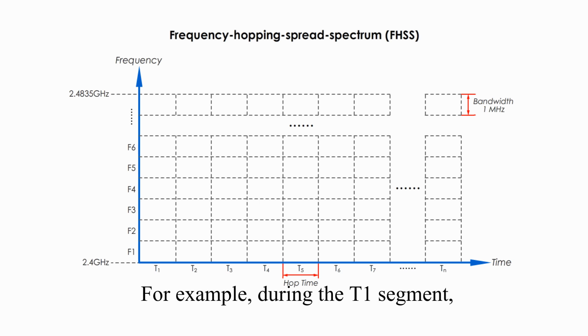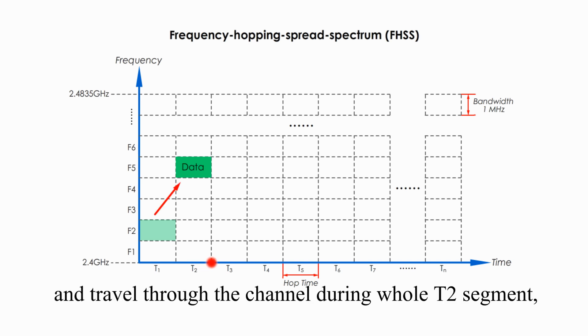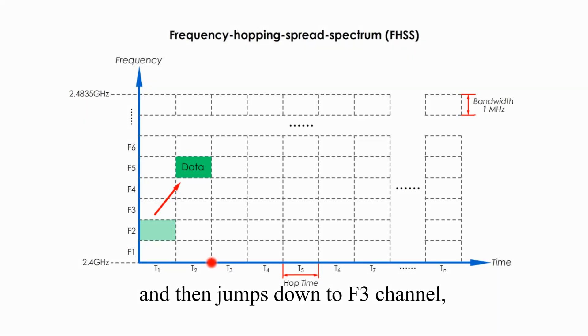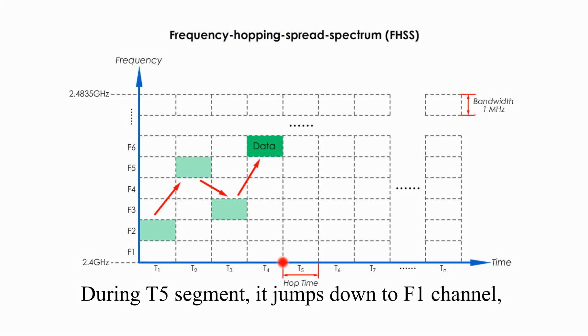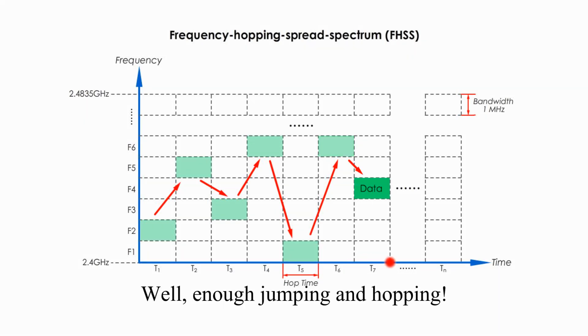For example, during the T1 segment, the data packet travels through the F2 channel, and then at the T2 segment, it leaps to F5 channel. And then jumps down to the F3 channel, and then leaps up to F6 channel. During T5 segment, it jumps down to F1 channel, and then hops up back to F6 channel, and then jumps down to F4 channel.